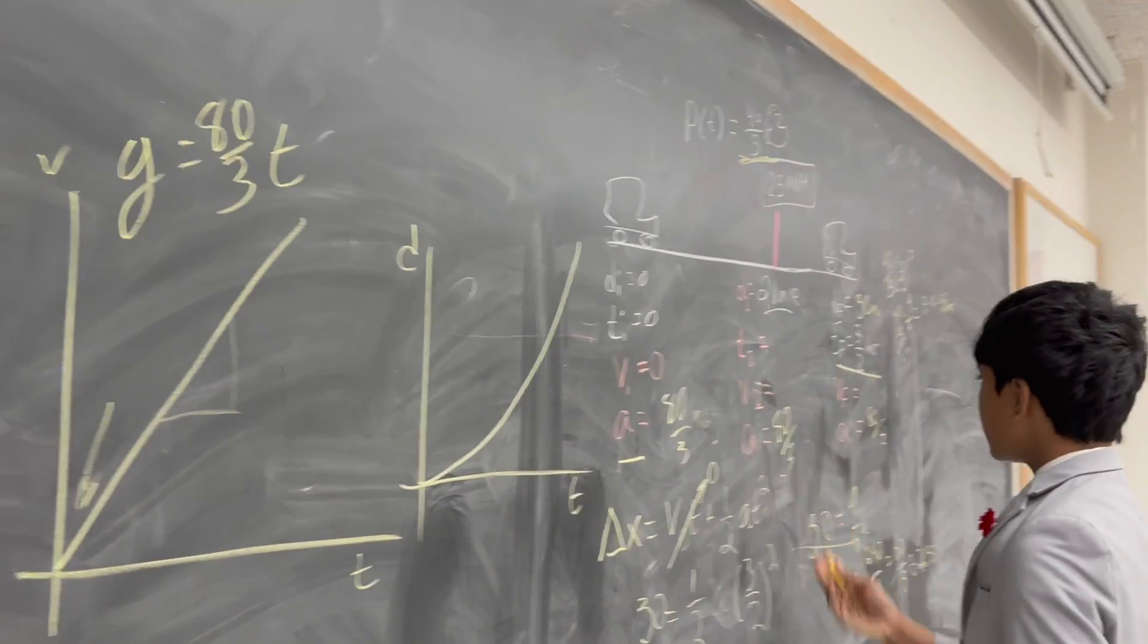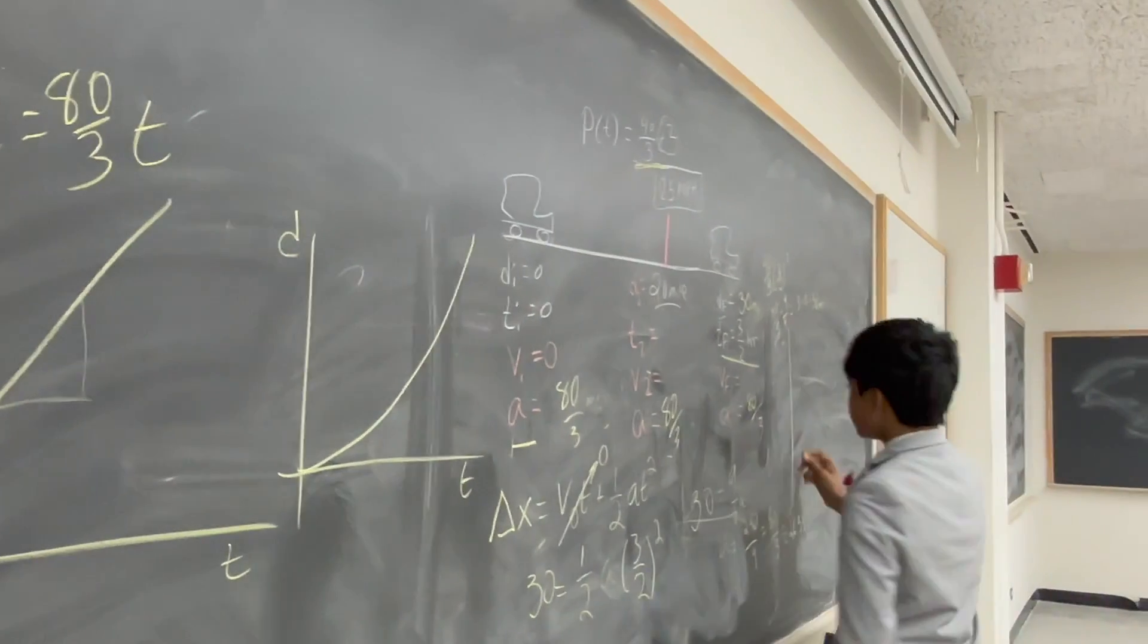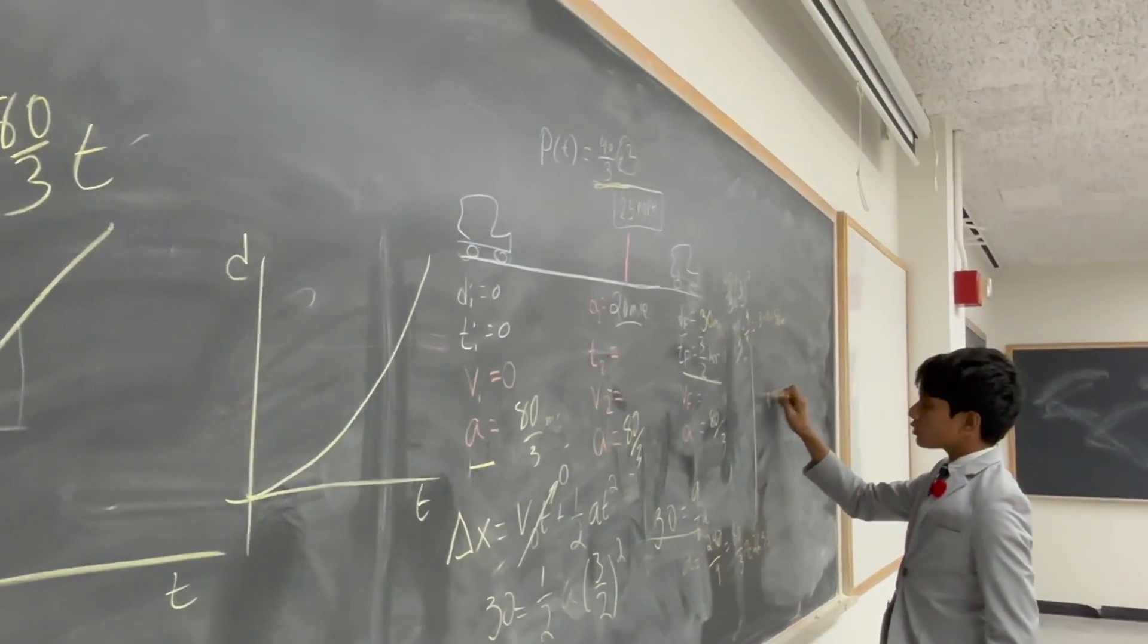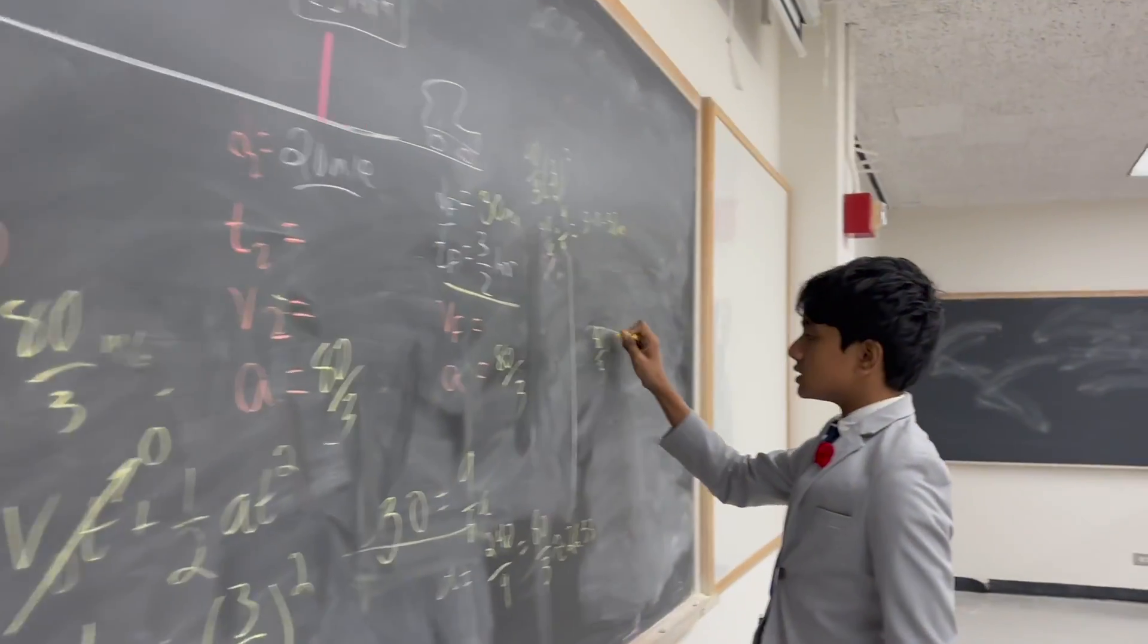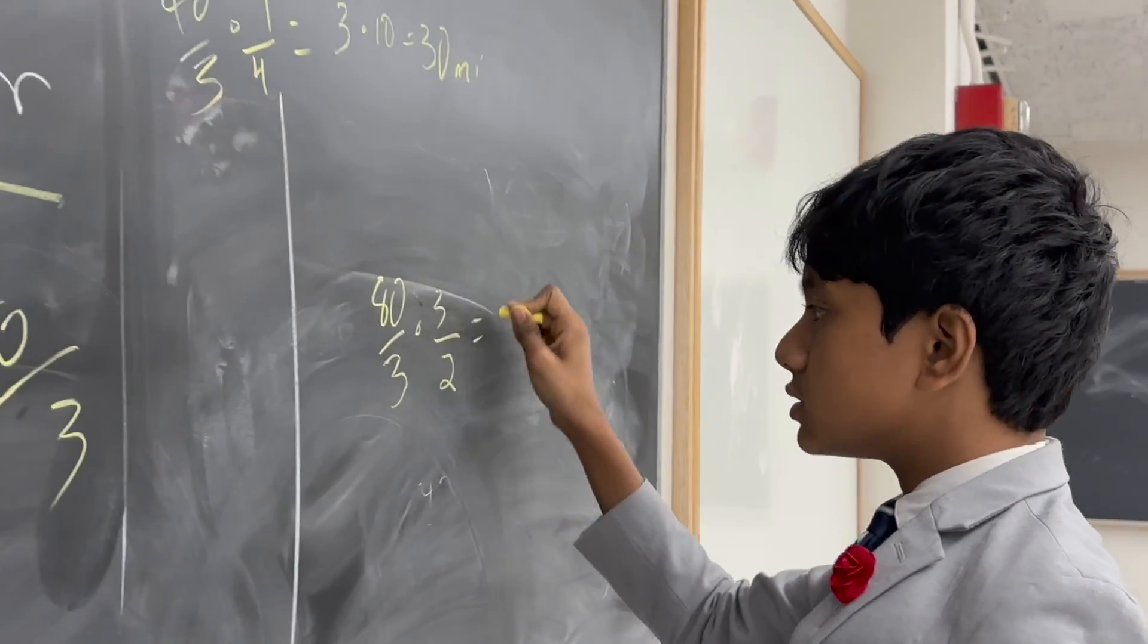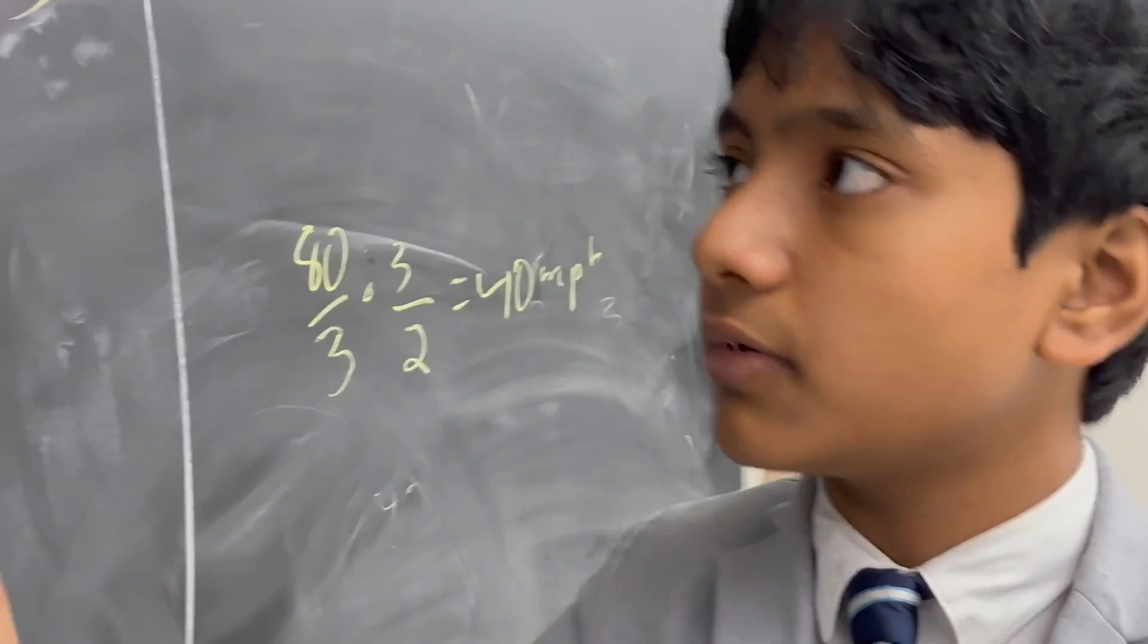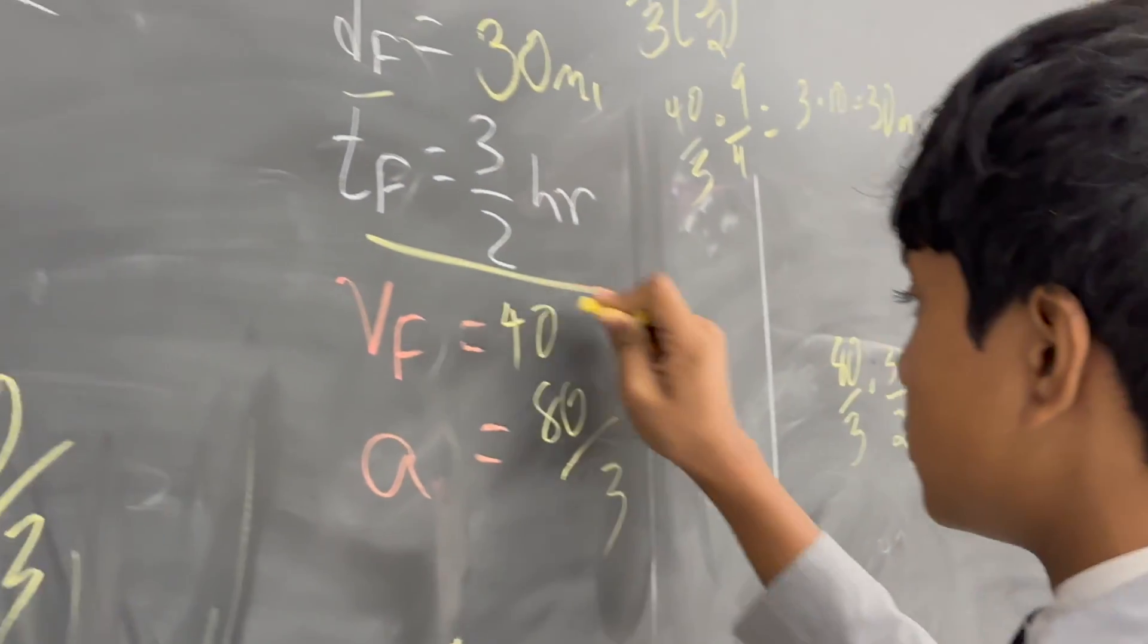So, now, we can just plug everything into that. Now, we know that V_f is equal to 80 over 3 times T, which is, at that point, 3 over 2, which just gives us 40 MPH. Hmm. 40. That's above 25. Things aren't looking too good for Mr. Berry.